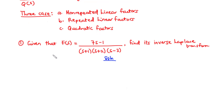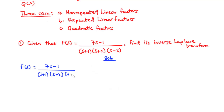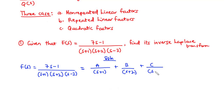We are given the Laplace transform f(s) equals (7s - 1) divided by (s+1)(s+2)(s-3). This is a rational function with non-repeated linear factors. So the partial fraction decomposition is given by A divided by (s+1), plus B divided by (s+2), plus C divided by (s-3). The denominator is made up of non-repeated linear factors.